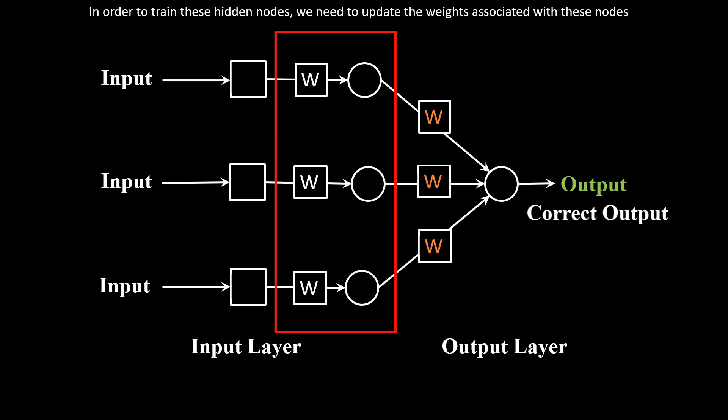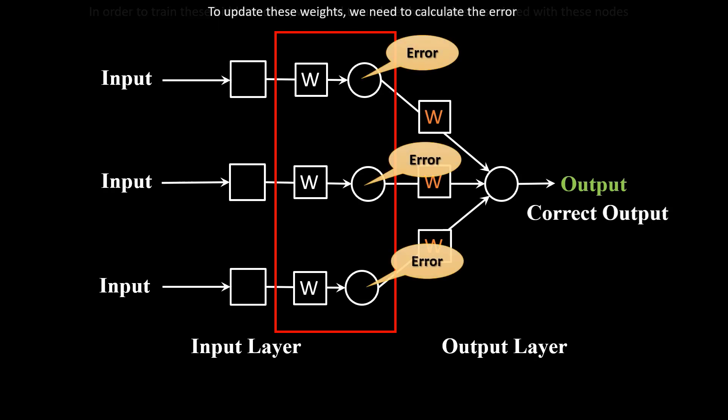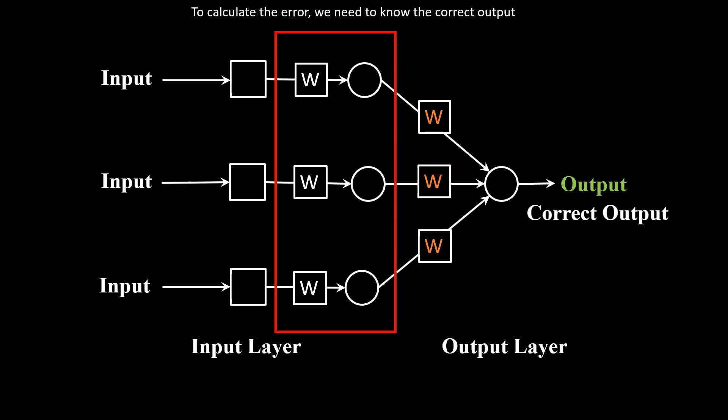In order to train these hidden nodes, we need to update the weights associated with these nodes. To update these weights, we need to calculate the error. To calculate the error, we need to know the correct output. Now the question is, do we have the correct output of these hidden nodes?